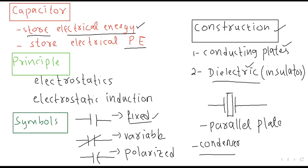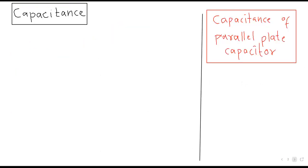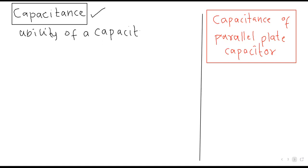Capacitor energy store کرتا ہے اور اس کی ایک property ہوتی ہے جسے capacitance of capacitor کہتے ہیں۔ Capacitance کی definition ہے: ability of capacitor to store the charge — یعنی کسی بھی capacitor کی electric charge store کرنے کی ability۔